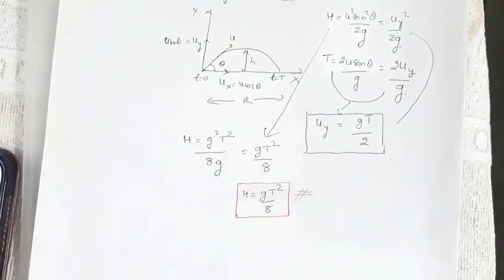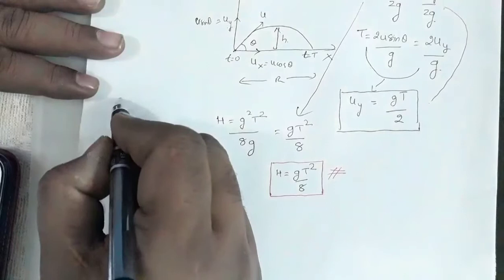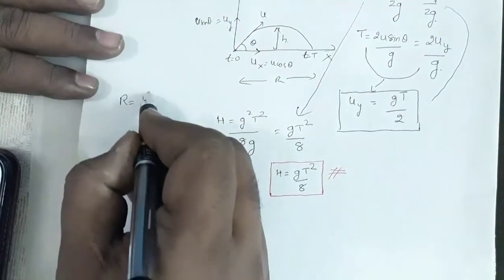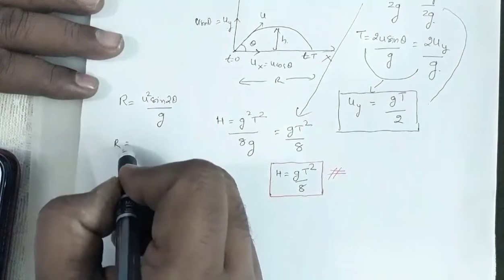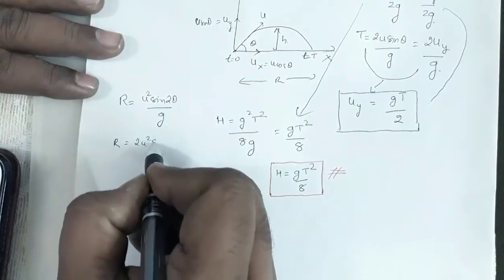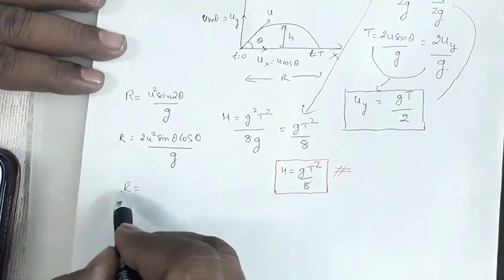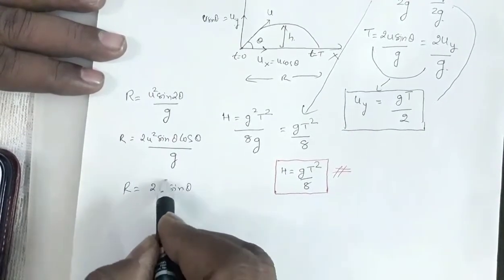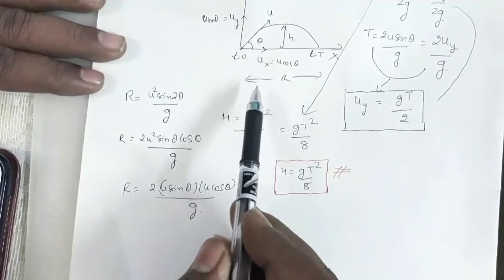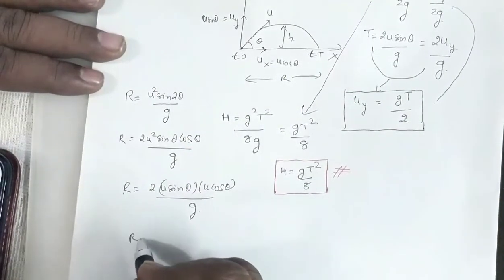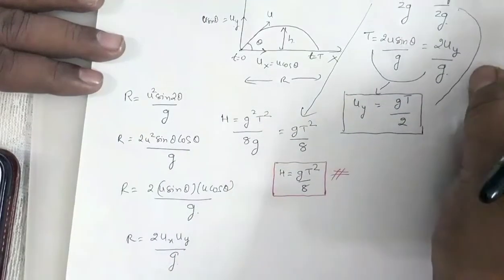Now the range is given by R = u² sin2θ / g. This can also be written as R = 2u² sinθ cosθ / g, or R = 2(u sinθ)(u cosθ) / g. Since u cosθ is ux and u sinθ is uy, I can write R as 2 ux uy divided by g.